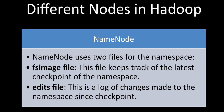The NameNode uses mainly two files for the namespace. First is the FSImage file, which keeps track of the latest checkpoint of the namespace — recording up to what point data has been stored. Then we have the Edits file, which contains a log of all the changes made to the namespace since that last checkpoint. Even if the system goes down, we can recreate the state using these two files.